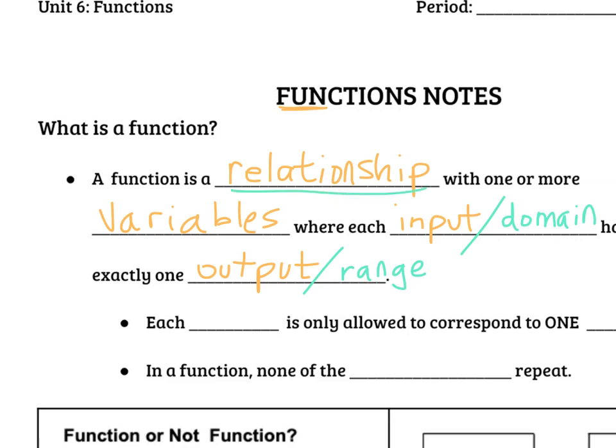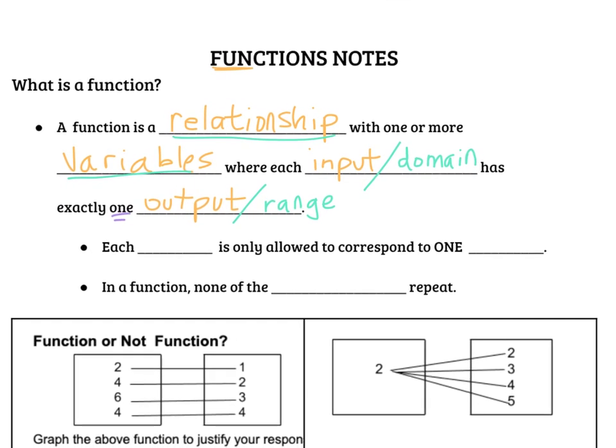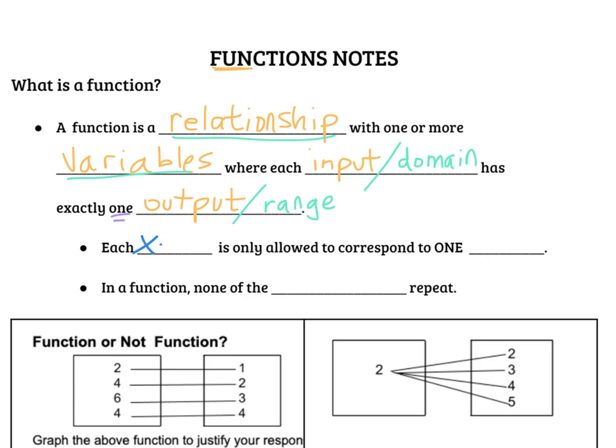So a function is a relationship with one or more variables where each input has exactly one output. In other words, each x value, which is input, is only allowed to correspond with one y value. So in a function, none of our x values can repeat.